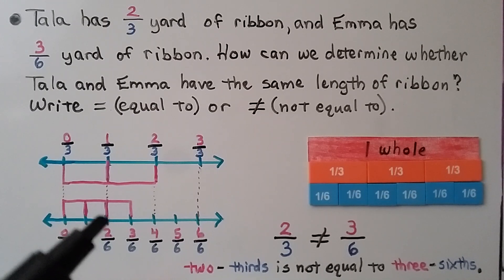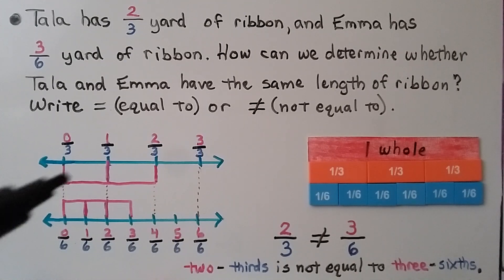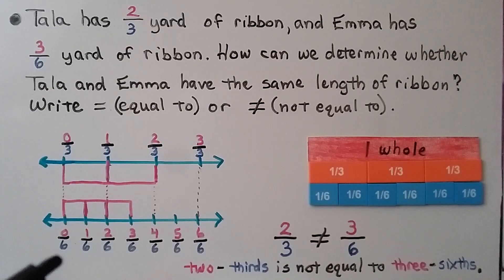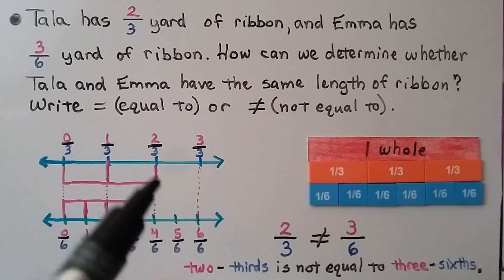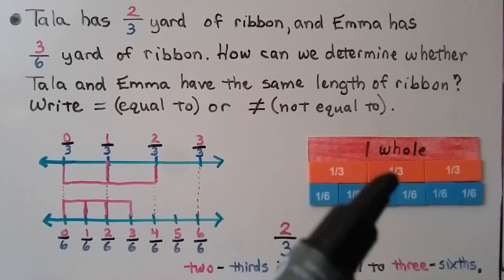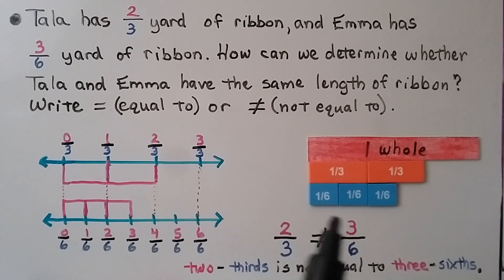The sixths number line goes: zero-sixth, one-sixth, two-sixth, three-sixth, four-sixth, five-sixth, and six-sixths. Tala has two-thirds, which is this much on the number line. Emma has three-sixths, which is this much. Are two-thirds and three-sixths equal or not equal? We can see two-thirds is more — it's greater. Two-thirds is not equal to three-sixths. Two-thirds would be two of these parts, and three-sixths would be only three of those smaller parts. Two-thirds is greater than three-sixths, so they're not equal.